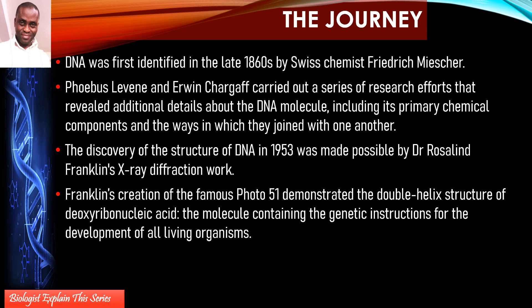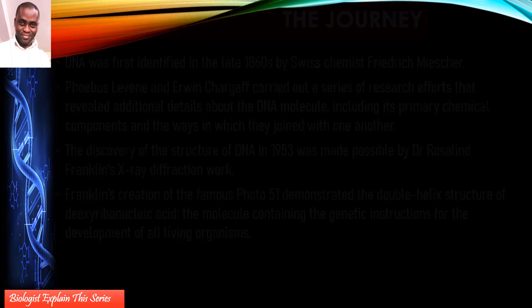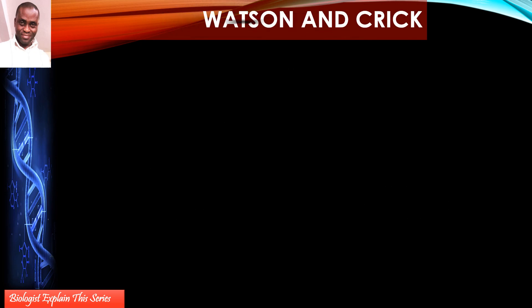Her discovery showed that there were two strands, but she couldn't fully explain it. In what was termed Photograph 51, Franklin showed the existence of a double-stranded structure, but she did not know exactly how to explain the biological basis of what she had discovered.